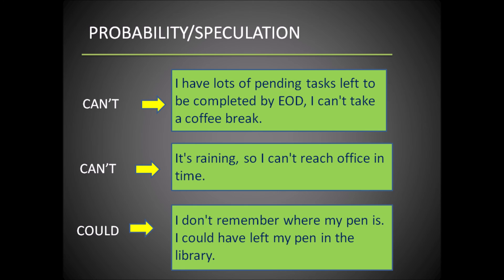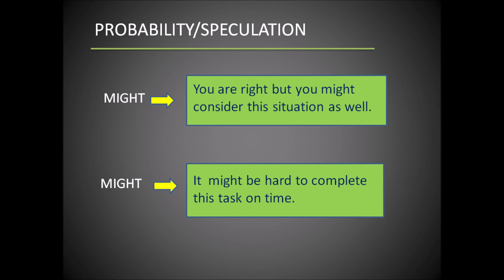Example using 'could': 'I don't remember where my pen is — I could have left my pen in the library.' Here the user doesn't remember where his pen is, so he is speculating using 'could.' For 'might': 'You were right, but you might consider this situation as well' — one person agrees with the other but suggests incorporating a new idea for a better outcome. 'It might be hard to complete this task on time' — the user is giving a view on the complexity of the task, suggesting it may take more time.